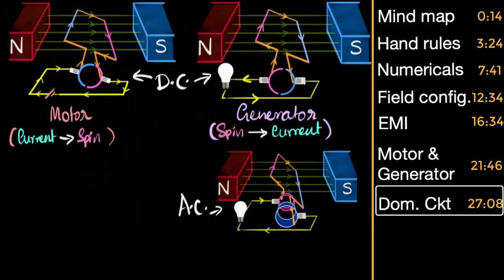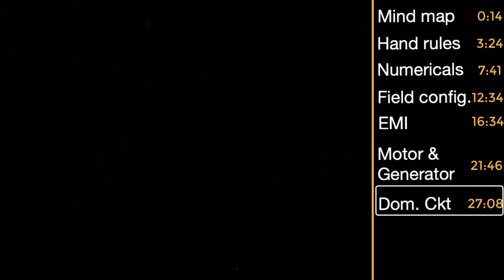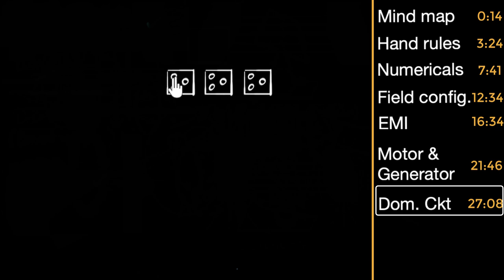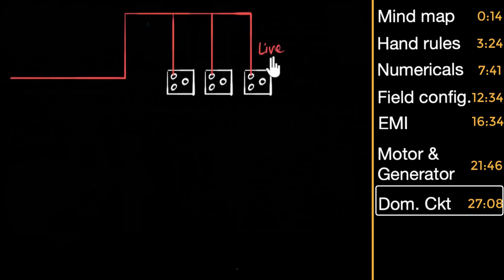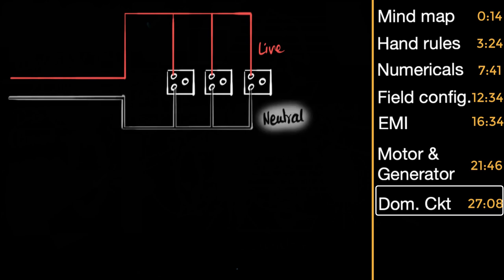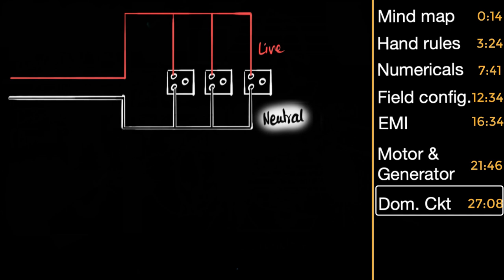That brings us to the last topic, domestic wirings. You are familiar with your household socket which has three holes. One hole is connected to a red wire called the live wire or hot wire — it's called so because it is at a very high voltage, making it extremely dangerous to touch. The hole opposite to that is connected to a black wire called the neutral wire — it's maintained at a very low voltage, usually the same as the ground, though again not a good idea to touch it.